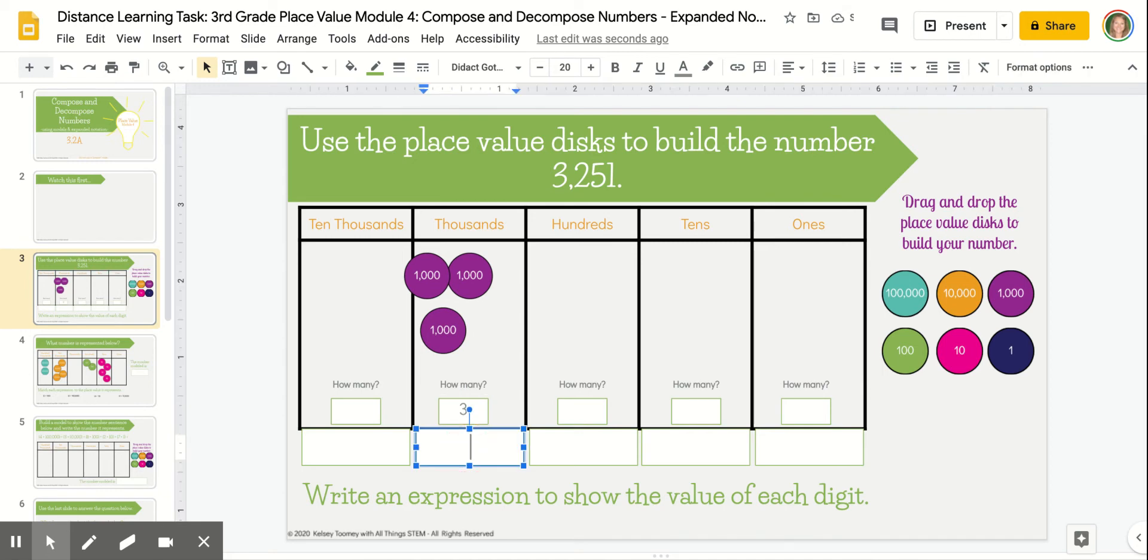To record this as an expression, I can use multiplication, simply because I have three groups of 1,000. You'll want to use parentheses to organize your expressions, because it will help make things easier to read later on when you're recording all of your expressions together.